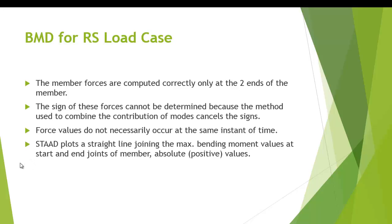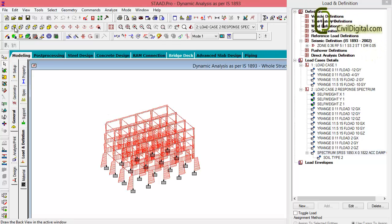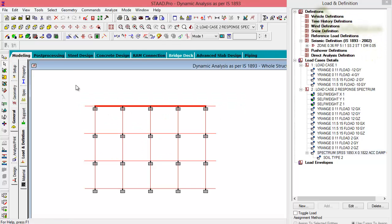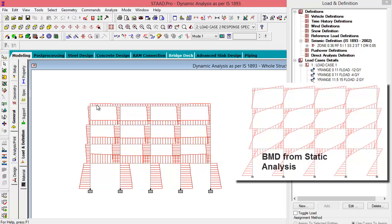If you check the bending moment diagram of our model, I will switch on the MZ value. From the top view, I will select a single frame. And if you take a look at the bending moment diagram, you can see that all the values are in positive direction. None of the values are in negative direction.